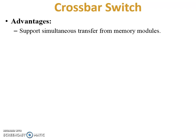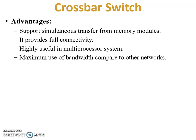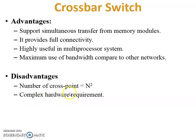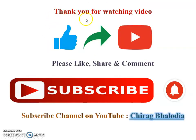Advantages: it supports simultaneous transfers from memory modules to different processors, provides full connectivity, is highly useful in multiprocessor systems, and allows maximum use of bandwidth compared to other networks. Disadvantages: the number of cross points is equal to n squared, so the number of cross points increases significantly; hardware requirements become complex because of the increased cross points and logic; and it is vulnerable to a single fault.